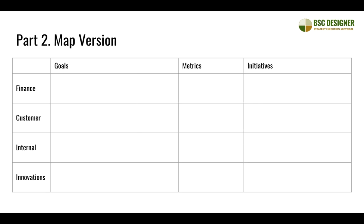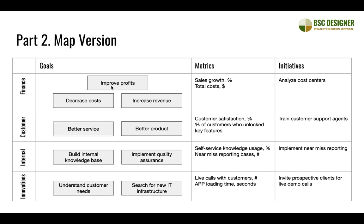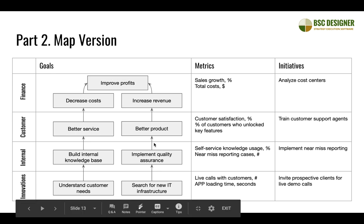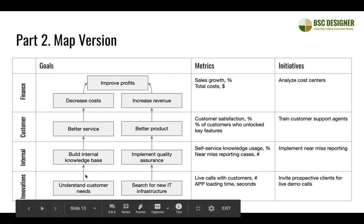Let's try to improve it. We'll start with the same table, but instead of listing goals as bullet points, we'll use graphical objects — rectangles — and add more as needed. We need to resize the table a little, but in any presentation software that's easy to do. Now we've solved one problem: we can use connections between these goal objects to explain the cause-and-effect logic. With just a few goals it's quite easy to link these objects.